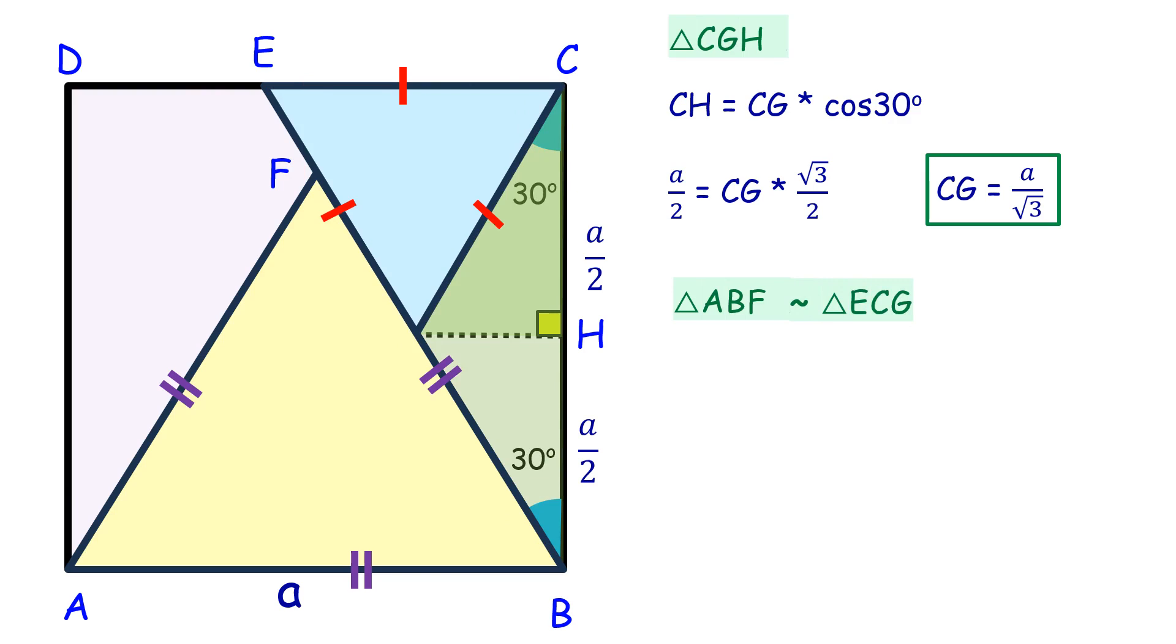For similar triangles, the ratio of their areas equals the square of the ratio of corresponding sides. Here we take sides AB and CG, so the area ratio equals (AB/CG)².